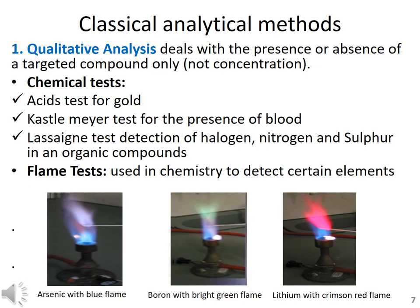When we talk about qualitative analysis in classical analytical methods, qualitative analysis deals with the presence or absence of the targeted compound. For identification of different classes of compounds, some basic chemical tests or flame tests are performed. Chemical tests include the acid test routinely performed for detecting gold, the Kastle-Meyer test used to identify blood in a sample, and the Lassaigne test performed to identify halogen, nitrogen, and sulfur compounds in an organic sample.